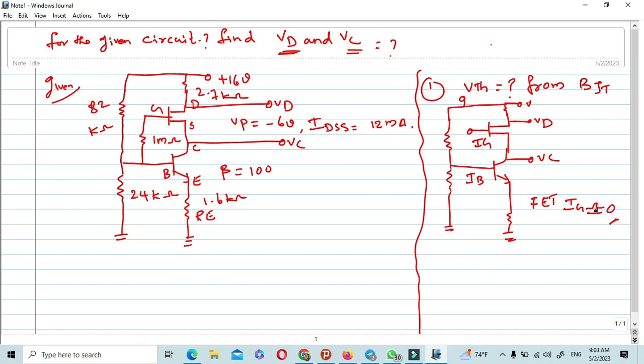By using this, we have to find the Thevenin's equivalent circuit. VTH equals VTH. Already we know 24 kiloohms here, and then here 82 kiloohms, here 1.6 kiloohms, and here 2.7 kiloohms.